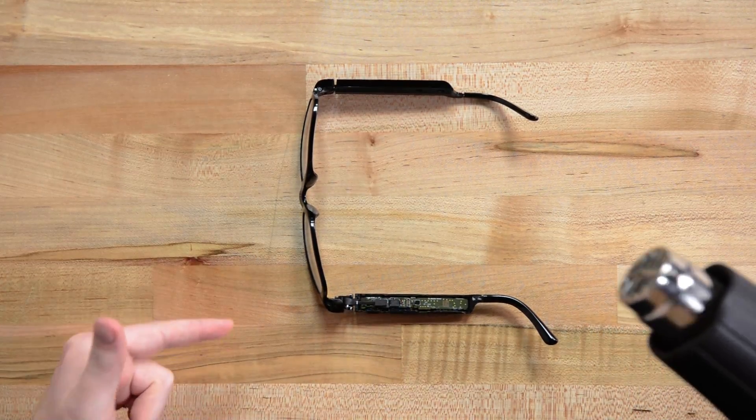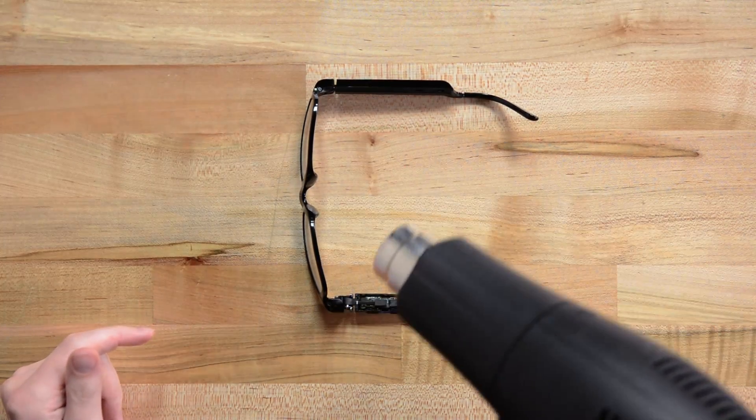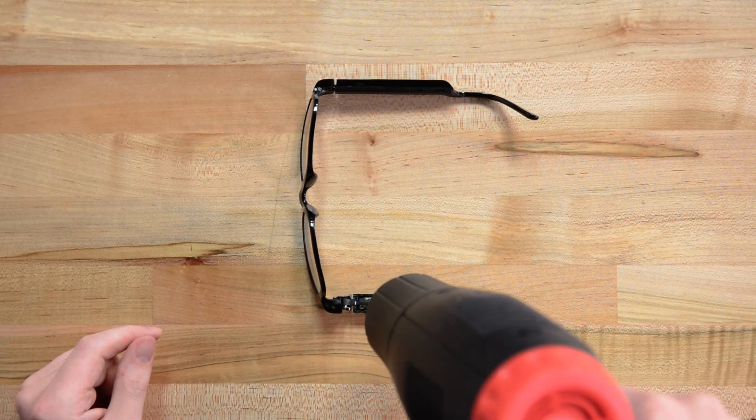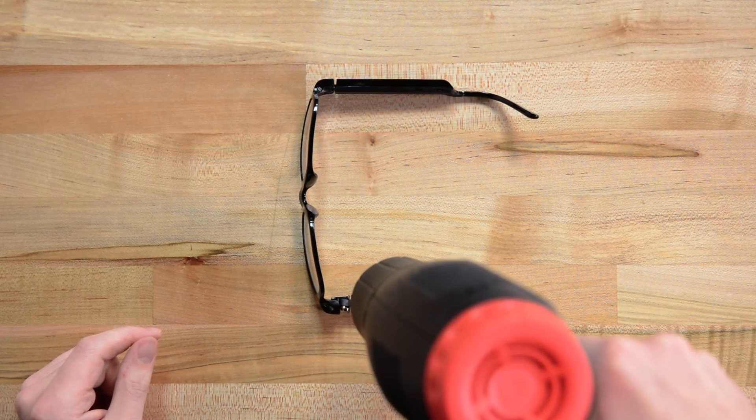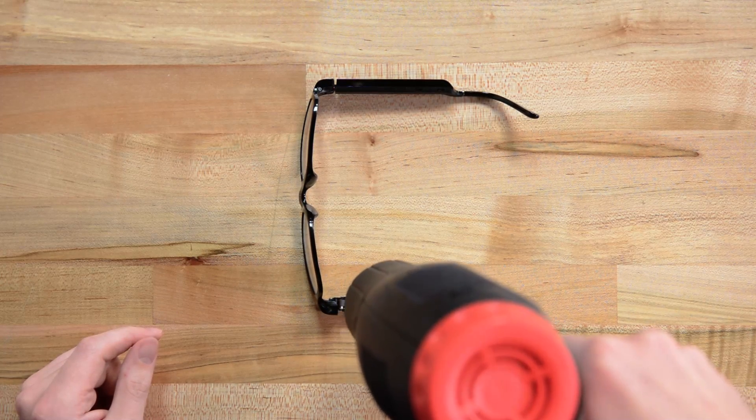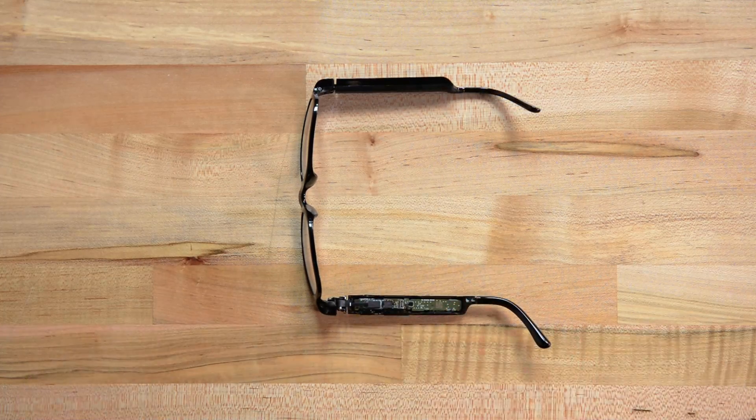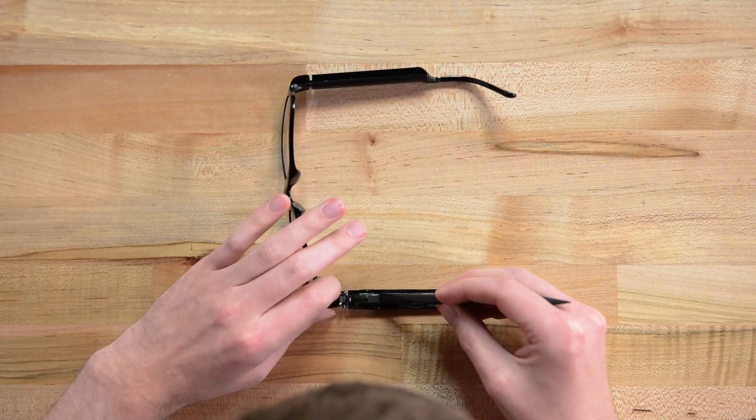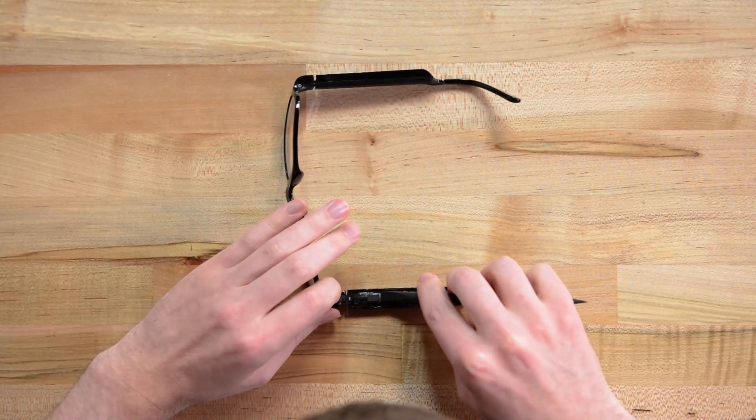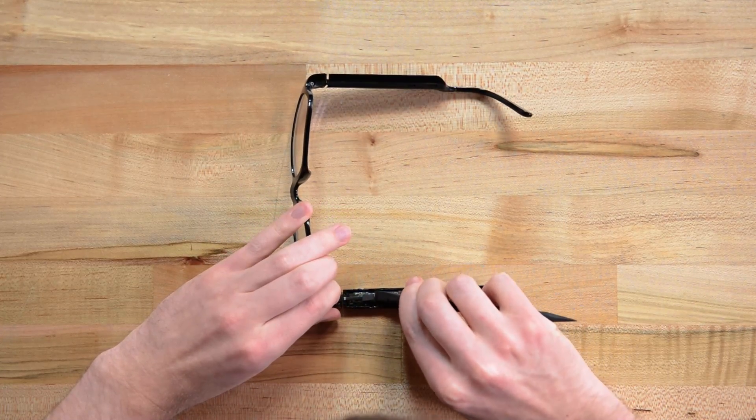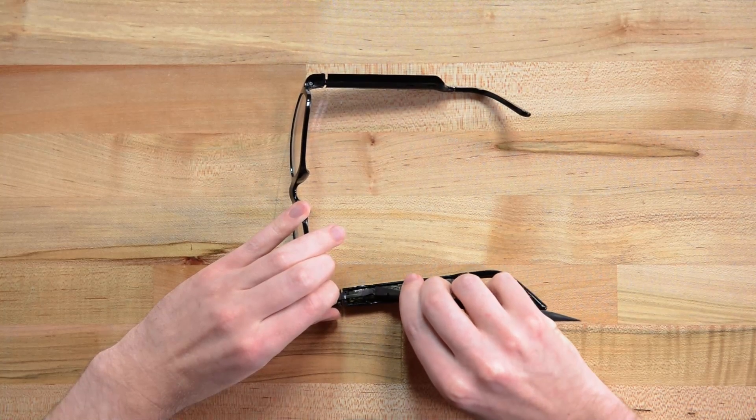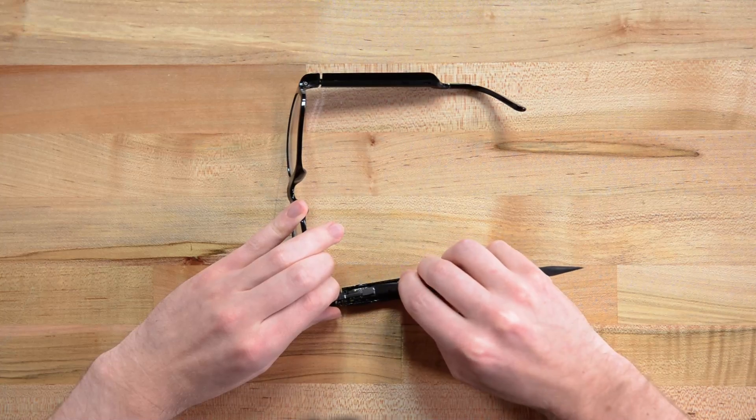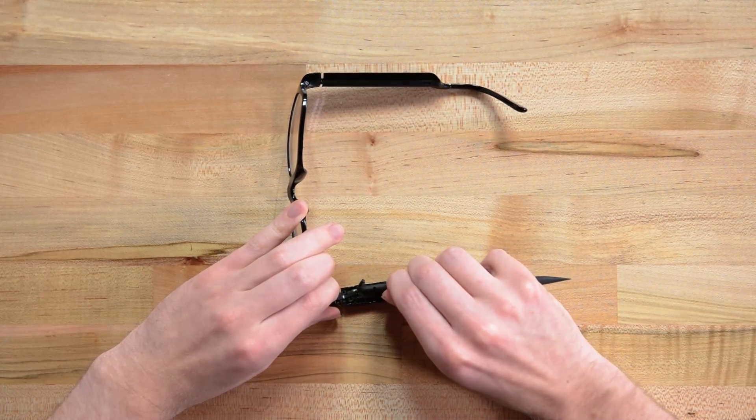I think I'm going to heat up this glue and try to disconnect this cable so that we can finally remove the arm from the rest of the frame. I think now all I need to do is unthread the cable from the hinge.